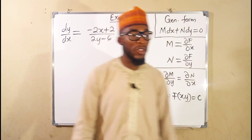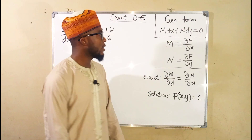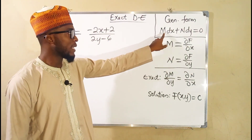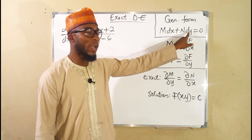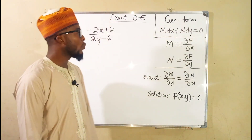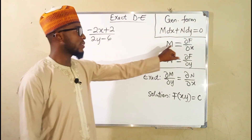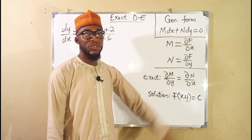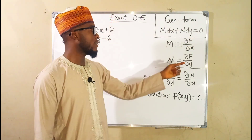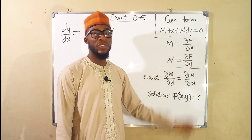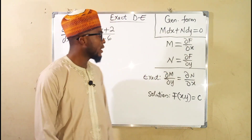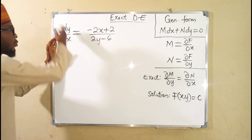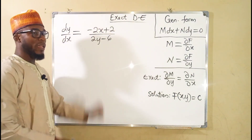If this is an exact differential equation, we have to transform it into the form M dx plus N dy equals zero, where M is the partial derivative of our original function f with respect to x, and N is the partial derivative of f with respect to y. First of all, let us multiply both sides by dx.